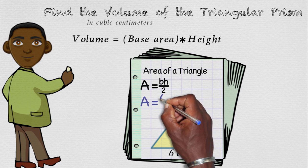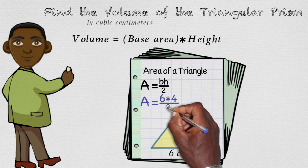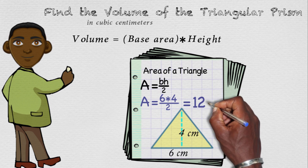Using the formula for the area of the triangle, we have 6 times 4 divided by 2. So the area of our base is 12 centimeters squared.